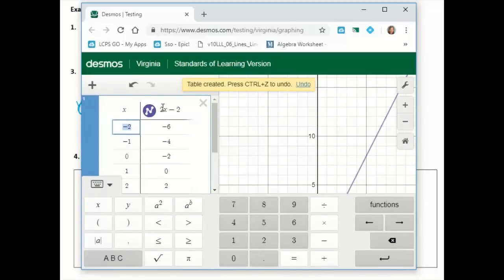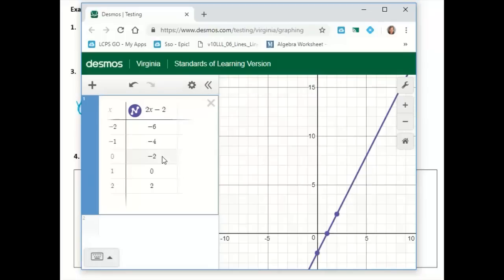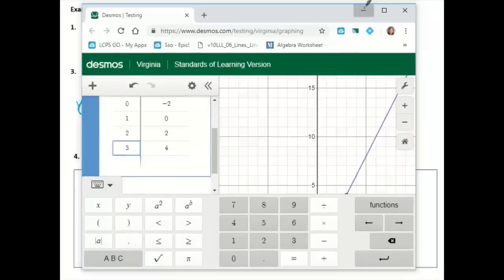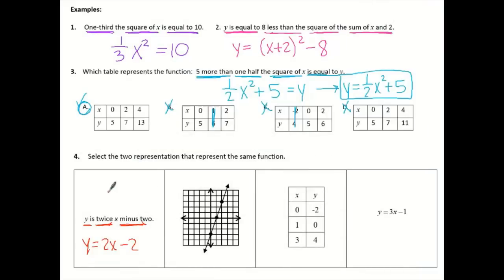And let's go ahead and look at our table because we have a table there. So the ones in the table say 0, negative 2. So that matches. 1, 0. So that matches. And then it also wants 3, 4. So let's see if I type in 3. I get 3, 4. So it looks like this one matches with this one.